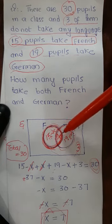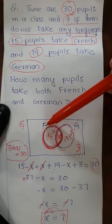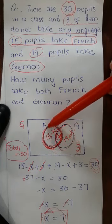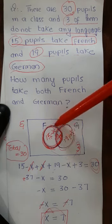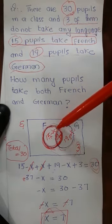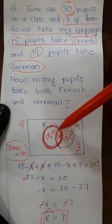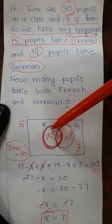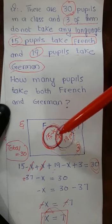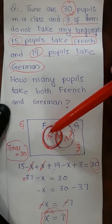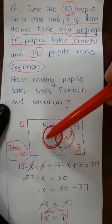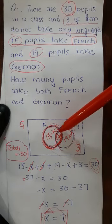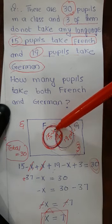Now, if this intersection part is X, then this complete circle representing French has a total of 15 students as given in the question. Because the overlapping part has X students, the rest of the French circle — those studying only French — will be 15 minus X.